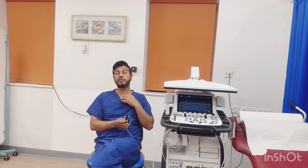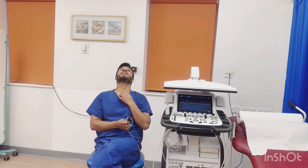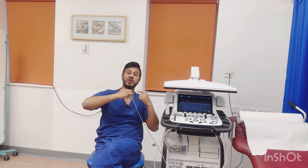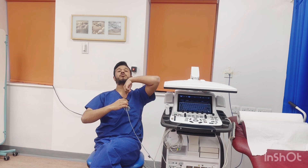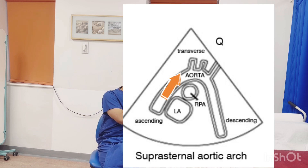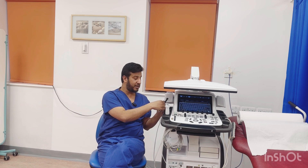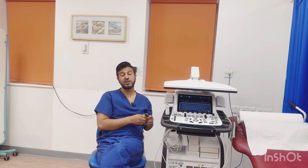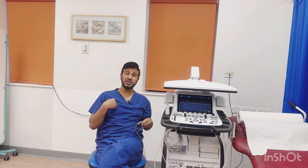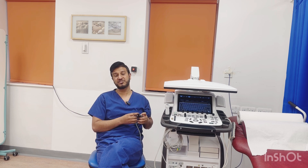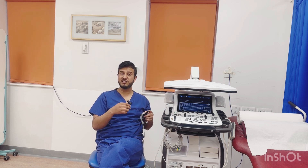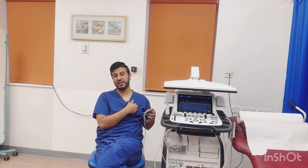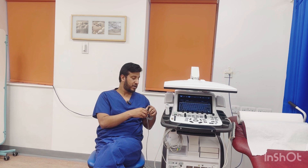For suprasternal images, ask the patient to remove the pillow and extend the neck. Place the probe in the suprasternal notch and direct it accordingly to align with the signal. For right parasternal images, try with the imaging probe first, then use the Pedof probe at approximately the third or fourth intercostal space. Don't hesitate to move slightly up or down to get a better signal.